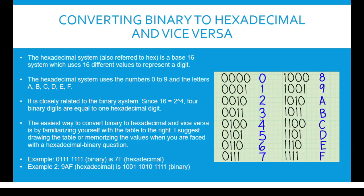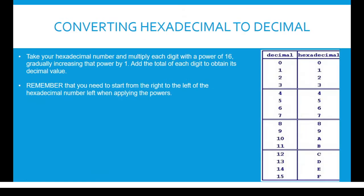We can see this in the diagram to the right. The easiest way to convert binary to hexadecimal and vice versa is by familiarizing yourself with the conversion table to the right. I suggest drawing the table or memorizing the values when you're faced with such questions. For example, 01111111 in binary is 7F in hexadecimal, and 9AF in hexadecimal is equal to 100110101111 in binary.